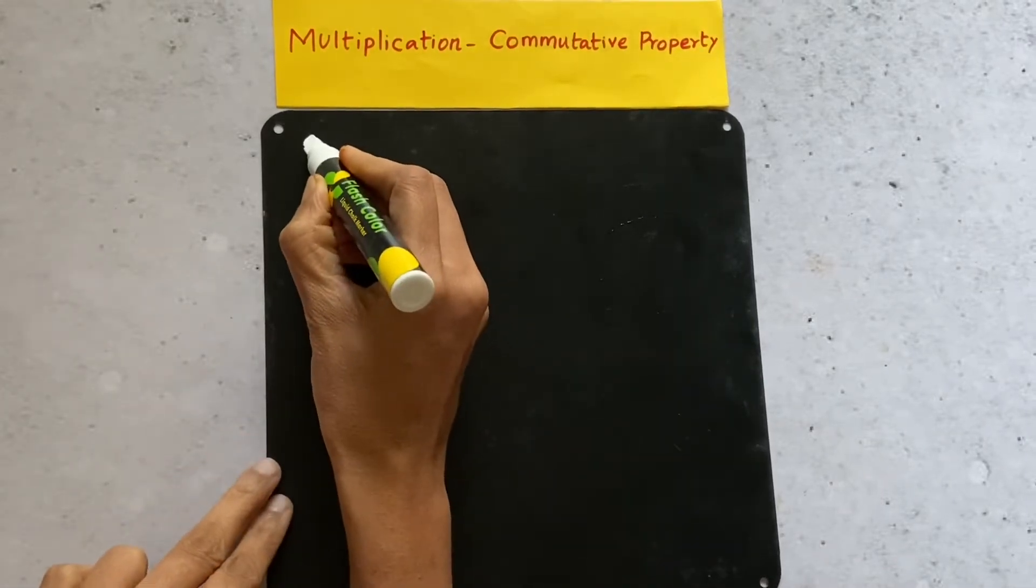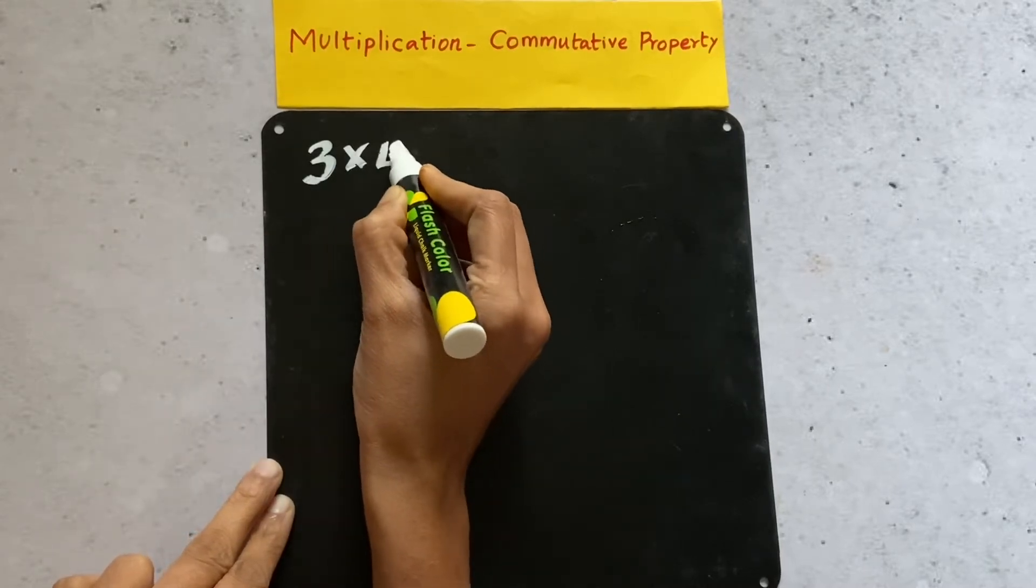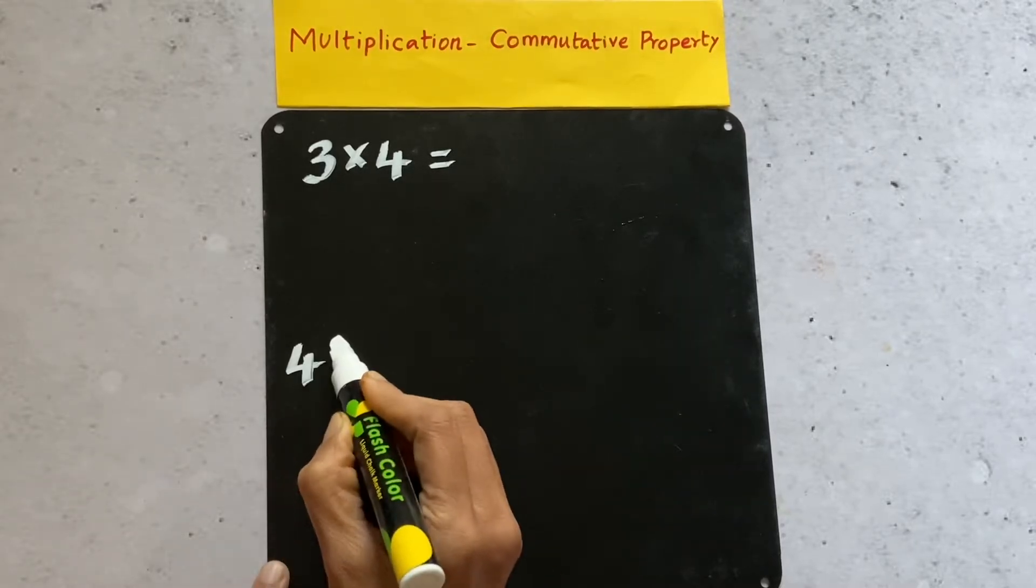So here I am taking the number three and four. So what is three times four and four times three?